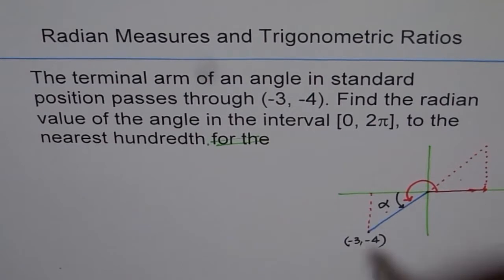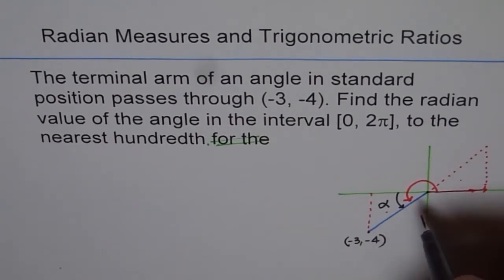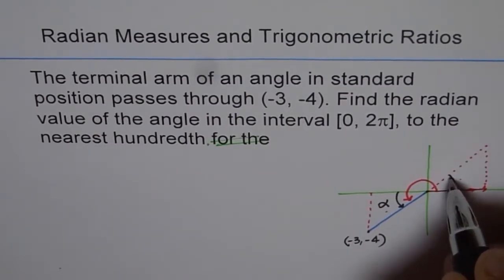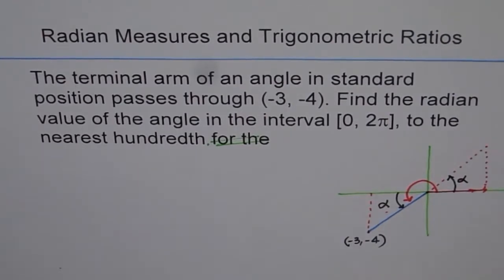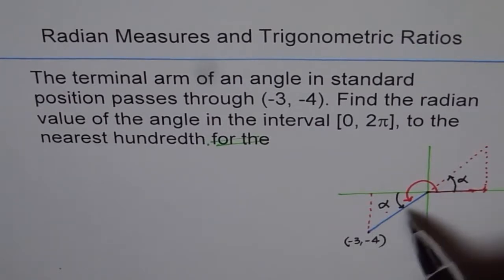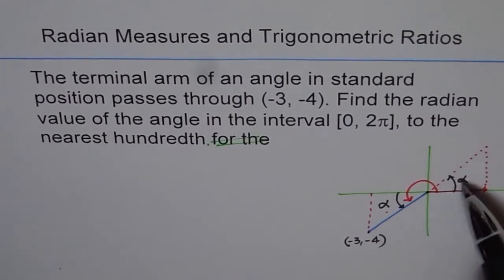So now these two triangles are similar triangles. Since if this is alpha this is vertically opposite angle, this will also be alpha. The concept of related acute angle is that any triangle in these four quadrants can be translated into a triangle in quadrant 1. And once we do that we can find the related acute angle.